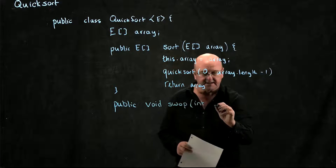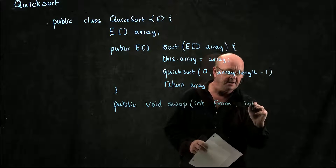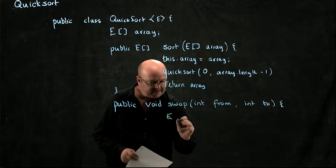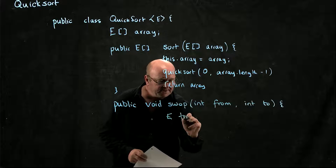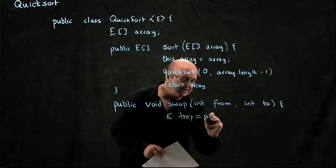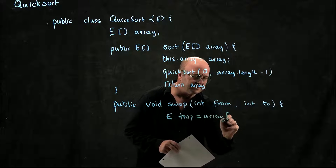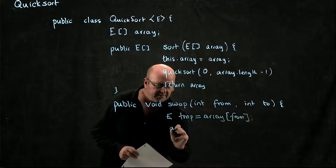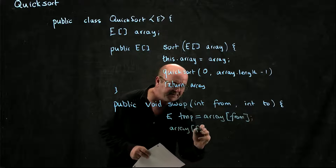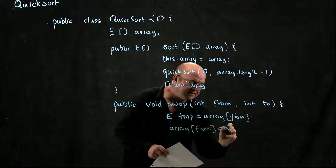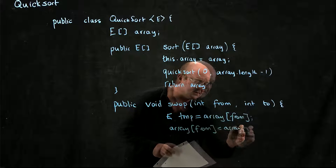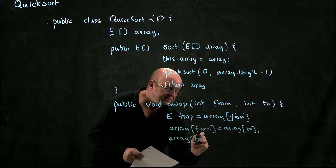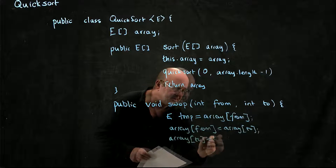So let's say `from` and `to`. All we're going to do is create a temporary variable E, and we're going to set that to `array[from]`. Then we're going to set `array[from]` equal to `array[to]`. And then we're going to set `array[to]` equal to `temp`.